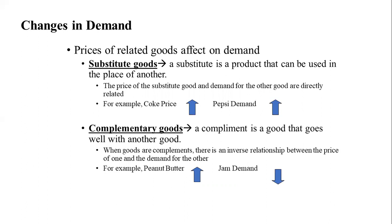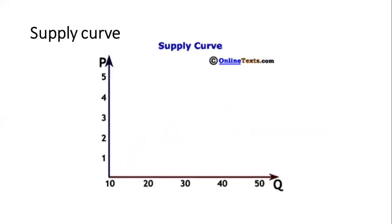A substitute is a product that can be used in place of another. For example, if Coke prices increase, people are going to demand more Pepsi, and vice versa. Complementary products are goods that go together, such as peanut butter and jam. If the price of peanut butter increases, the demand for jam will decrease, since they have an inverse relationship.